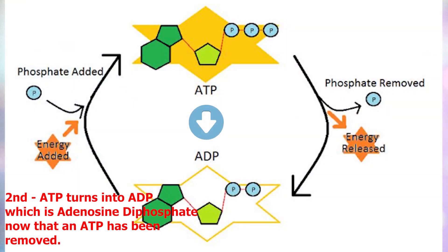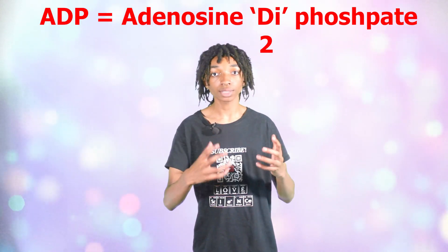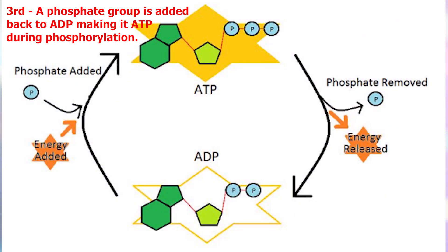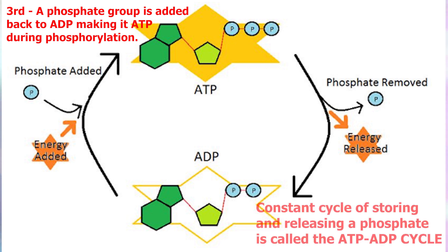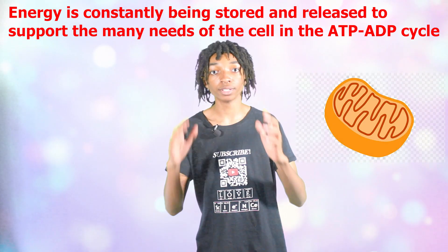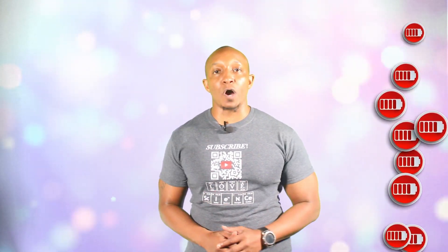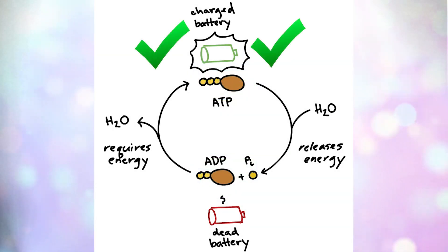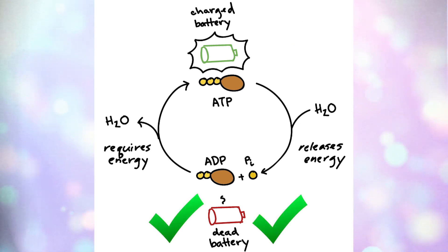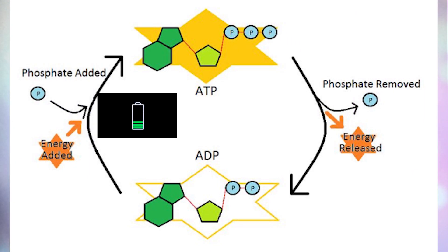Now that a phosphate is removed, ATP turns into ADP, which stands for adenosine diphosphate. Di stands for the number two, so that lets us know that we only have two phosphates on the molecule now, which is why we call it ADP. Think of ADP as a partially charged battery that needs charging. A phosphate group is then added back to ADP, making ATP again through the process of phosphorylation. This constant cycle of releasing a phosphate and then adding a phosphate is called the ATP-ADP cycle. Energy is constantly being stored and released to support the many needs of cells. The ATP-ADP cycle is like the charge on your phone — when your phone has a full charge, it's like ATP, full of chemical energy. When you use your phone, the battery gets low, like ADP, because it has been releasing heat and chemical energy throughout the day. So you have to plug your phone in to fully charge from ADP back up to ATP.